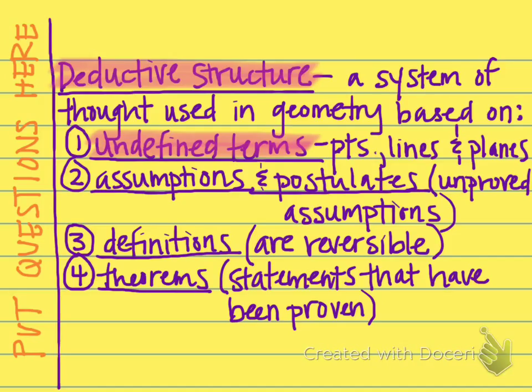Number two are assumptions and postulates. Assumptions we've talked about. Assumptions are things that we can safely assume to be true from a picture. And the way that we would write this in our two-column proof is assumed from diagram. A postulate is a word that means unproved assumptions, and we're going to learn about some of those later on in the year.